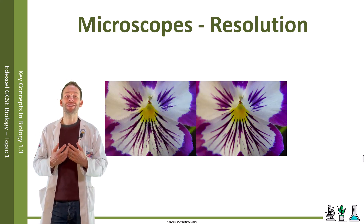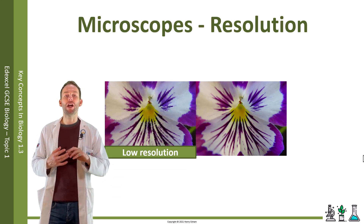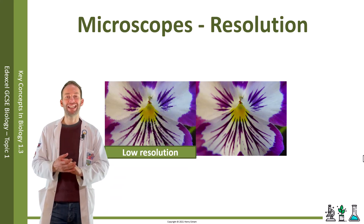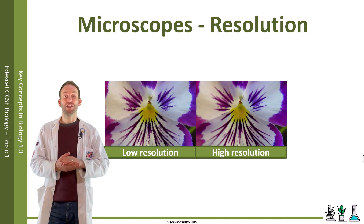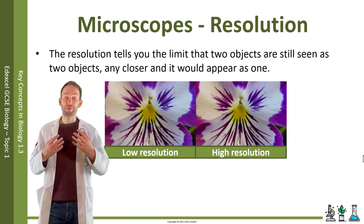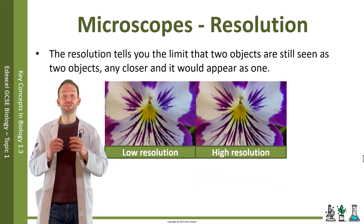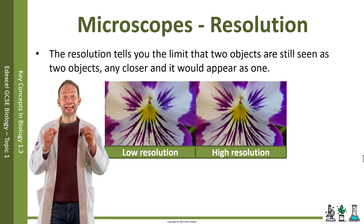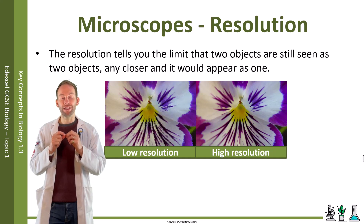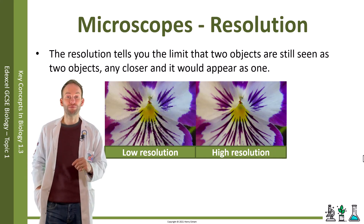Look at these two images here. They look quite similar, but look more carefully — one is a bit blurry, a bit pixelated; it's a lower resolution than the other one. In terms of a proper definition, the resolution tells you the limit at which two objects are still seen as two separate objects. Any closer than that resolution limit, and they will blur and just be seen as one.